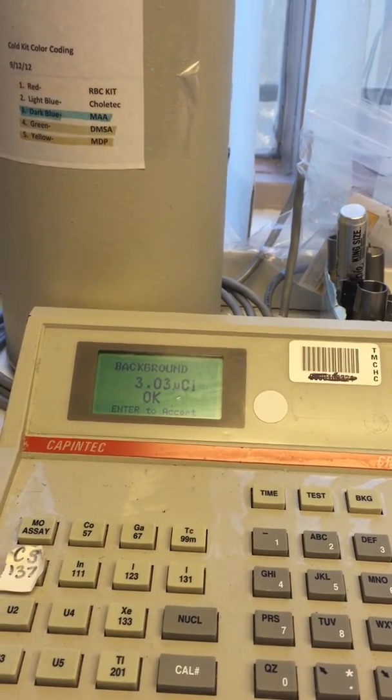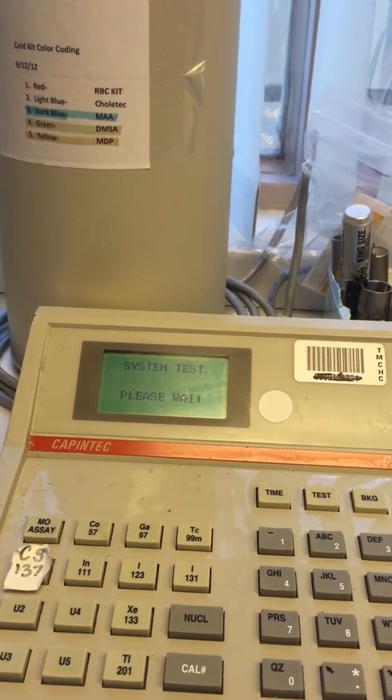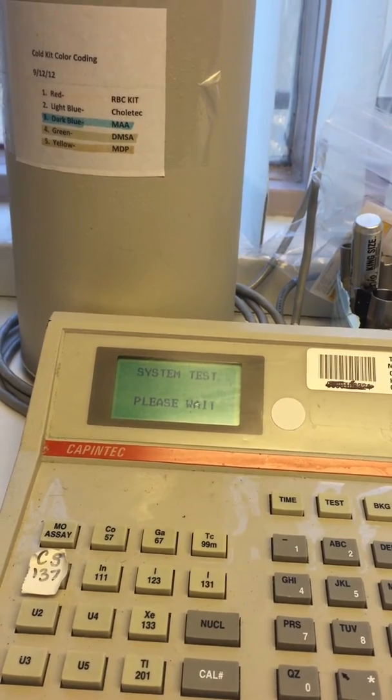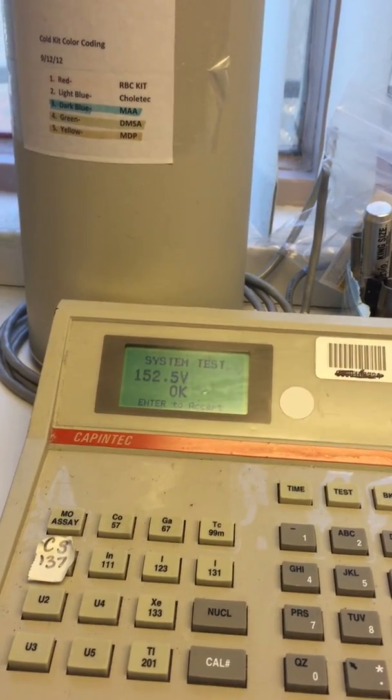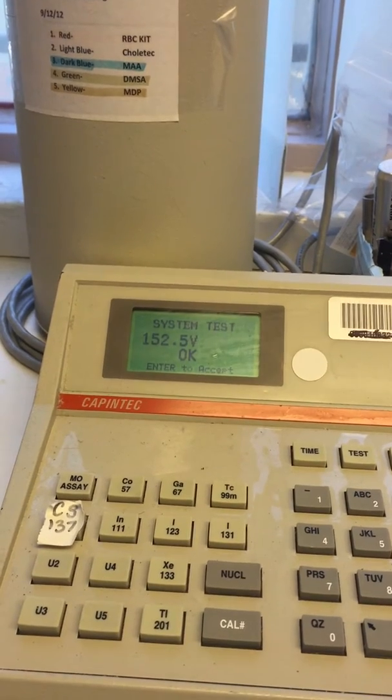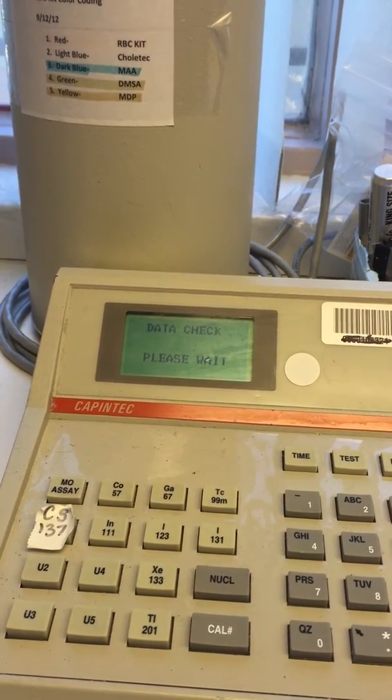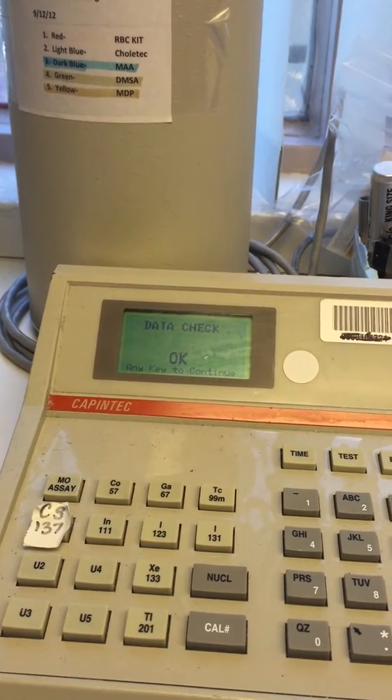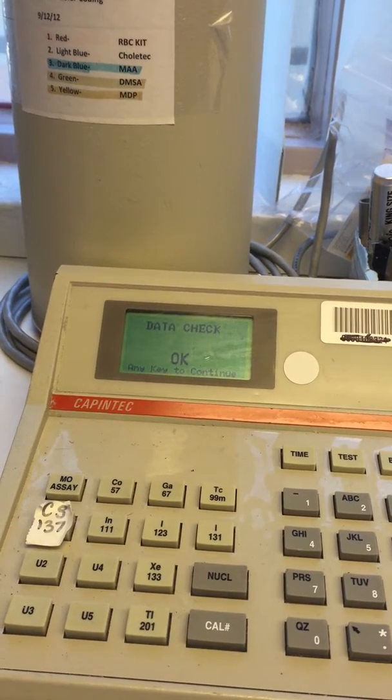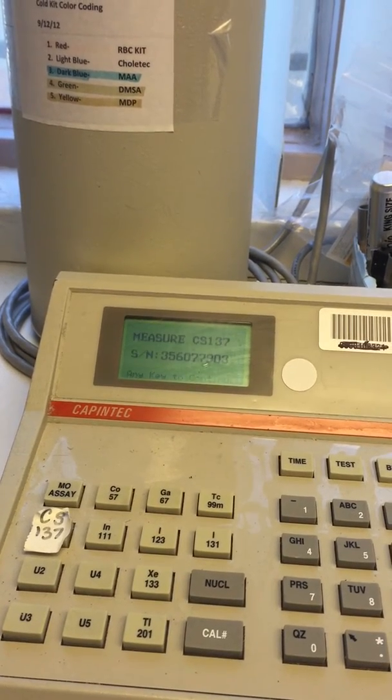Okay, we're going to push enter. Set that. Then it's going to measure the voltage of the dose calibrator. 152.5. That's good. Any key? Okay.